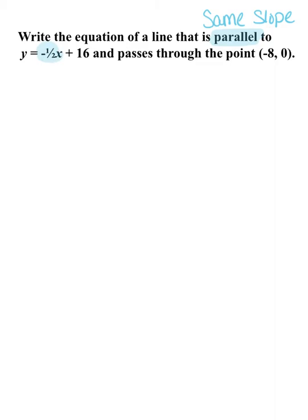That means our line is going to have a slope of negative 1/2, and our line also passes through this point (-8, 0). That's going to be important. I'm going to label that x sub 1, y sub 1. So that will help me put everything together in a point-slope form.